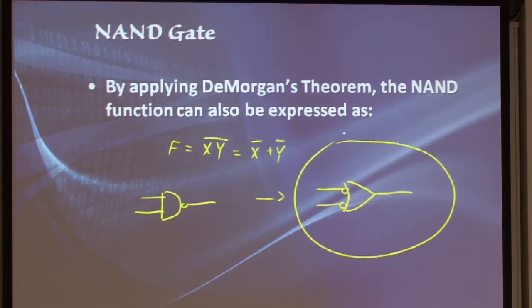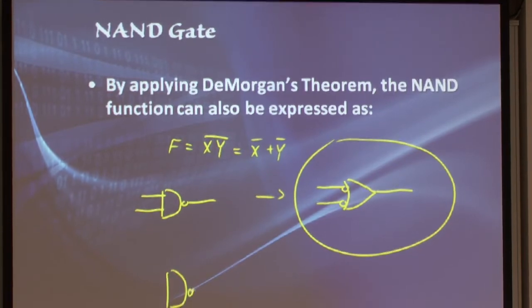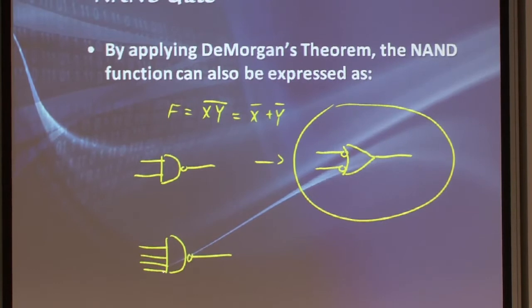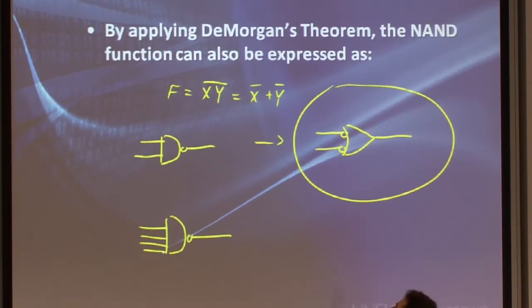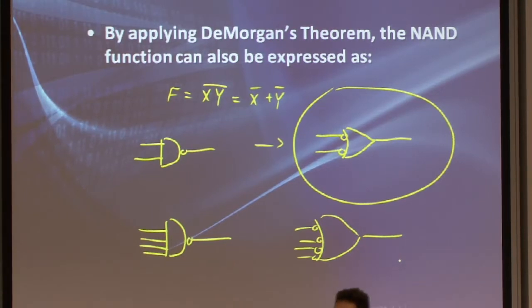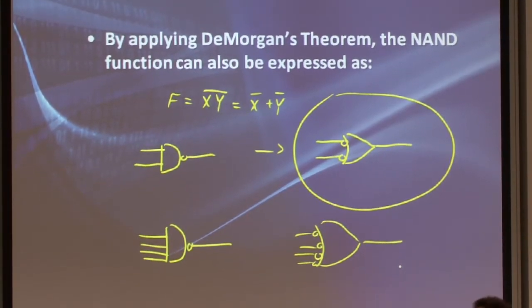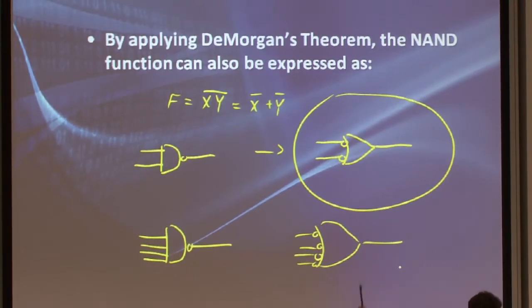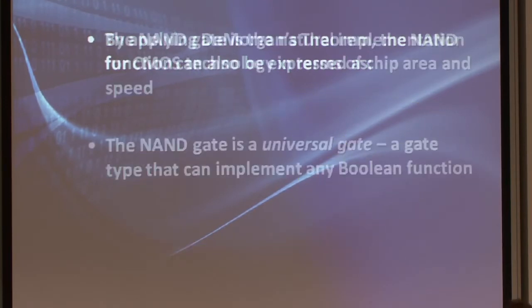Now this trick works even if you have more than two inputs to the NAND. You can have a three, four input NAND gate. When you convert it to its alternate representation, you will end up with four bubbles into an OR gate. Again, we didn't change the functionality. This is a four input NAND gate as well.